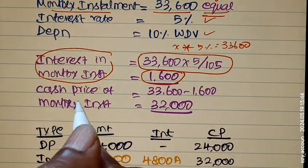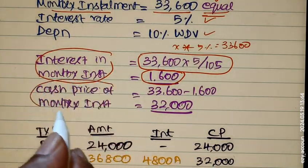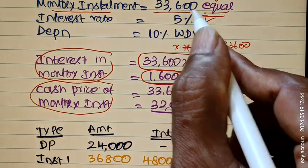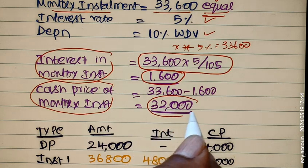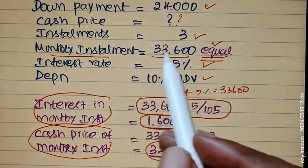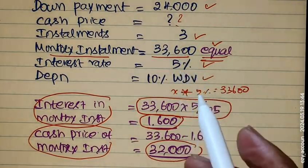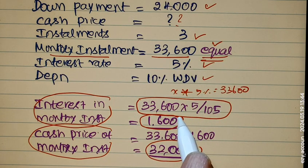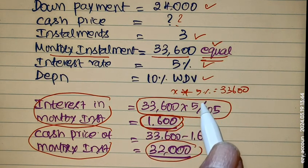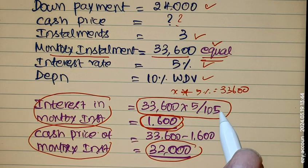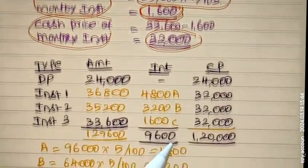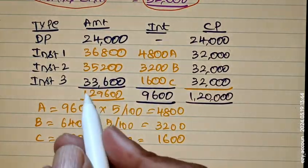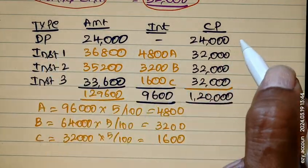So what is the Cash Price in the monthly installment? 33,600 minus 1,600 equals 32,000. Clear? So now we know the Cash Price per installment is 32,000. Also, the first Down Payment is 24,000.